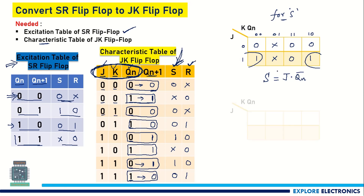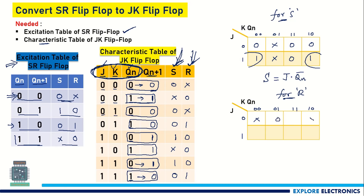Similarly, we need a K-map for the expression R. Looking at the R column values and filling the K-map: X, 0, X, 1, 0, 0, 0, 0, 0, 0, 0, 1. Grouping the ones gives R = K·Qn, since J gets cancelled and the remaining variables are K and Qn. So the two expressions are: S = J·Q̄n and R = K·Qn.